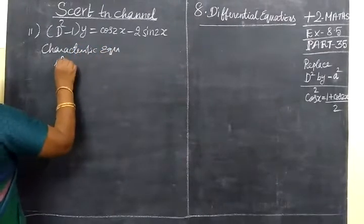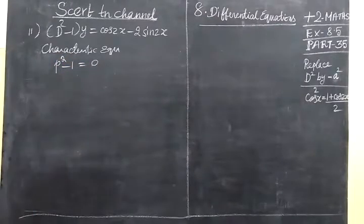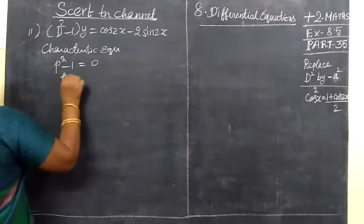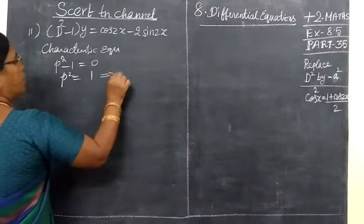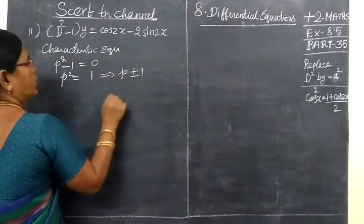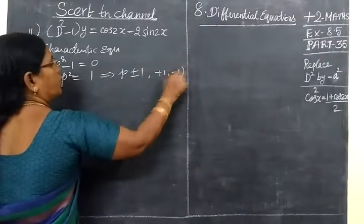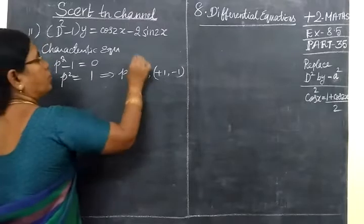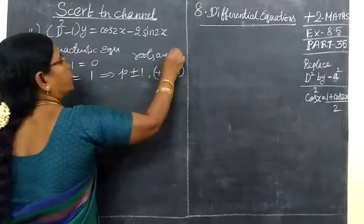So D² - 1 = 0, giving D = 1 or D = -1. The roots are m₁ = 1 and m₂ = -1. The roots are unequal and distinct.